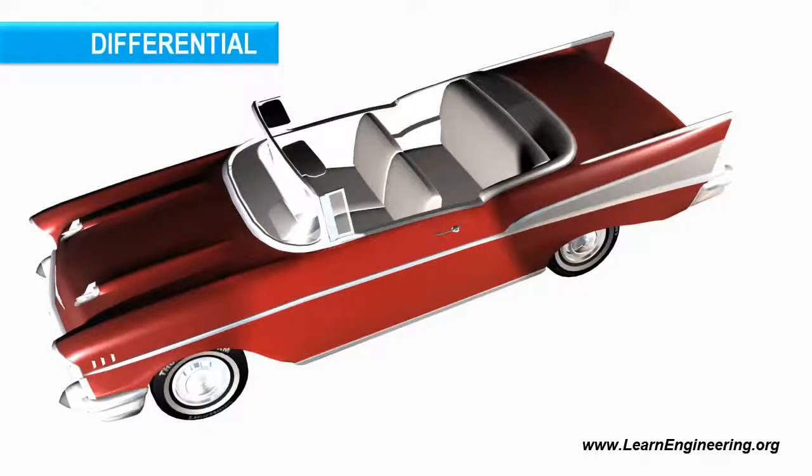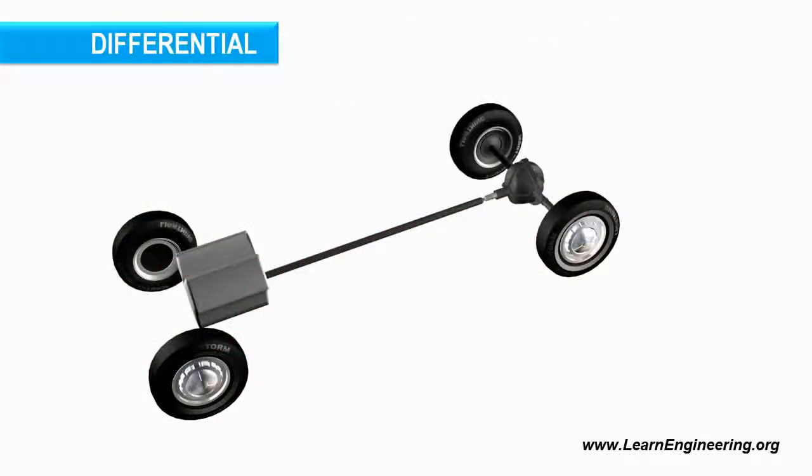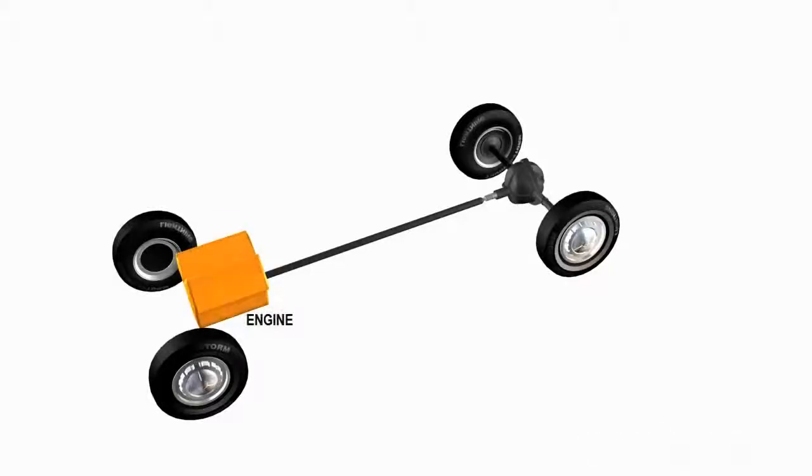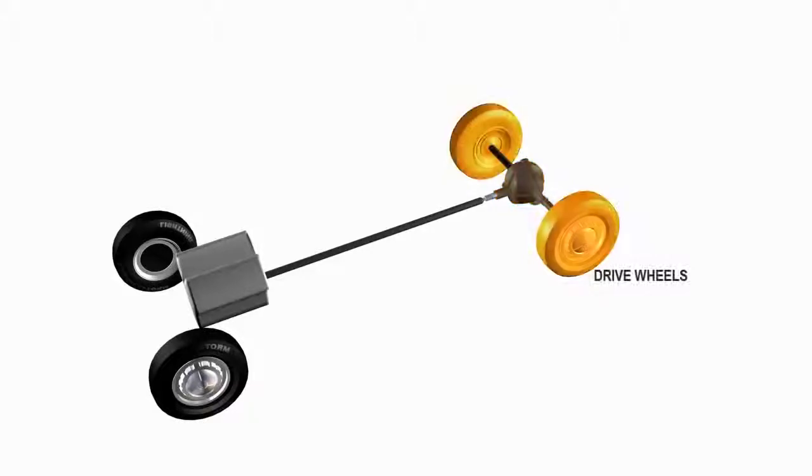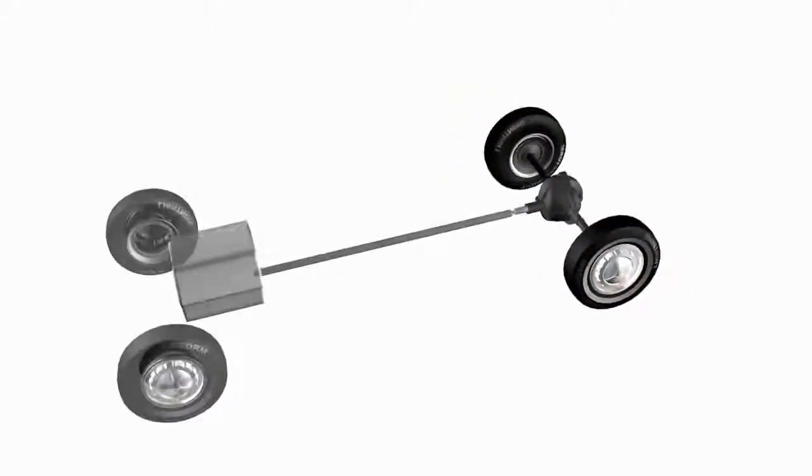Differential is an integral part of all four wheelers. Wheels receive power from the engine via a drive shaft. Main function of the differential is to allow these wheels to turn at different RPM while receiving power from the engine.